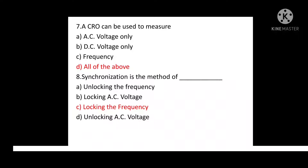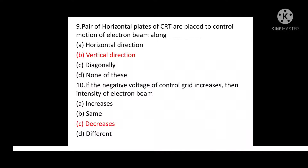Question No. 9: A pair of horizontal plates of CRT are placed to control motion of electron beam along? Option A: Horizontal direction. Option B: Vertical direction. Option C: Diagonally. Option D: None of these. Correct answer is: Vertical direction.